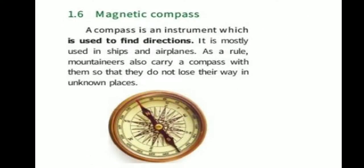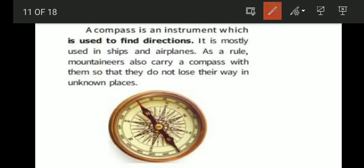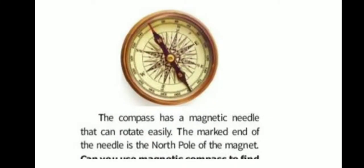Magnetic compass. A compass is an instrument which is used to find directions. It is mostly used in ships and airplanes. Mountaineers also carry a compass with them so that they do not lose their way in unknown places. The compass has a magnetic needle that can rotate easily. The marked end of the needle is the north pole of the magnet.